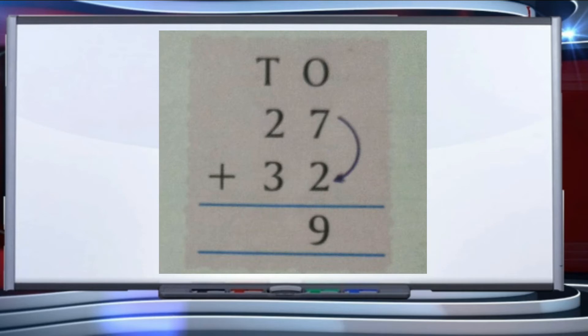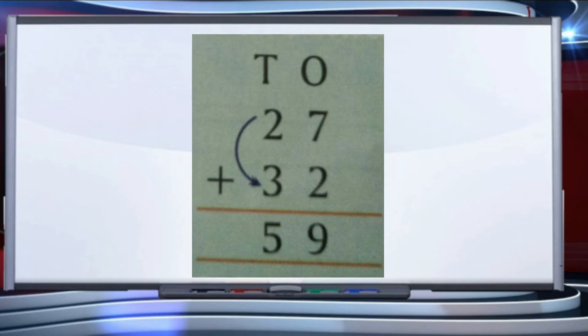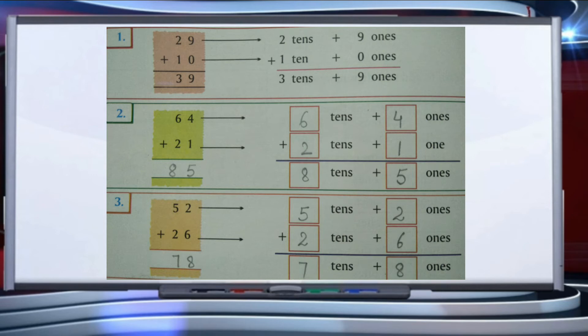We can also write this in columns with tens and ones. 27 plus 32: first step, add the ones place — seven plus two equals nine. Then add the tens place — two plus three equals five. So the answer is fifty-nine. Now let us do Activity 1: add by expanding.